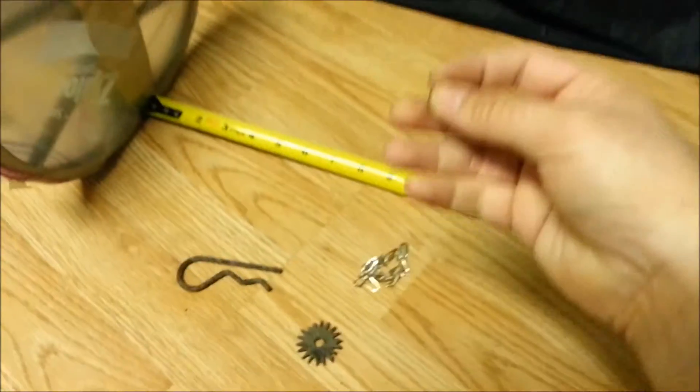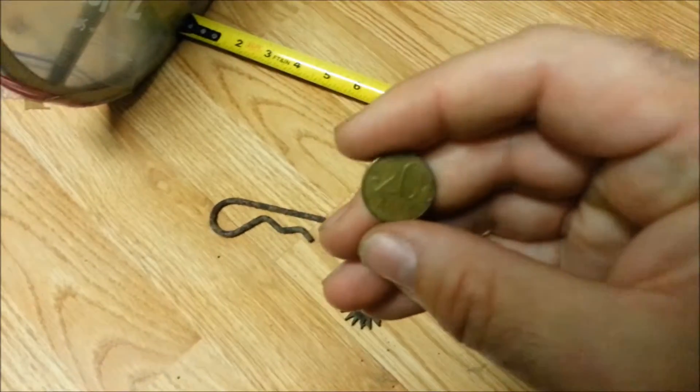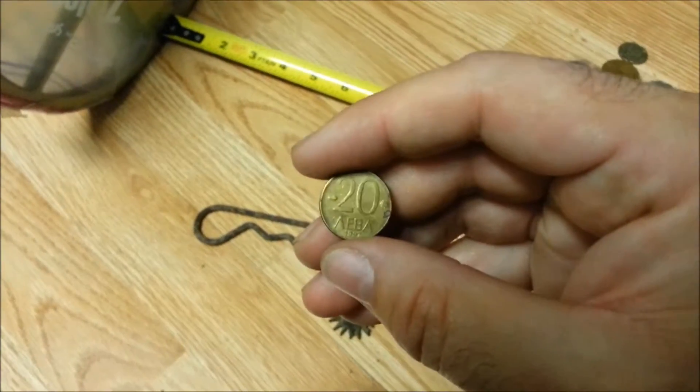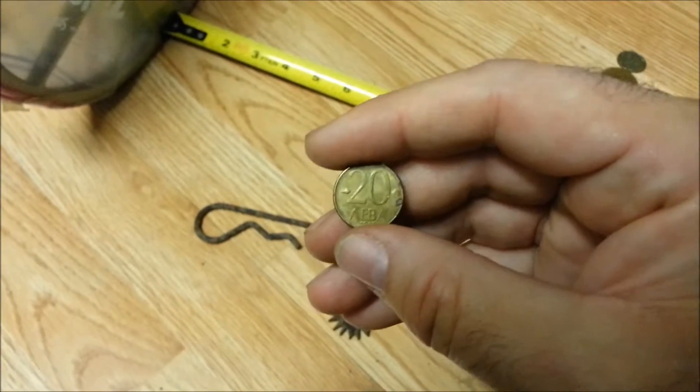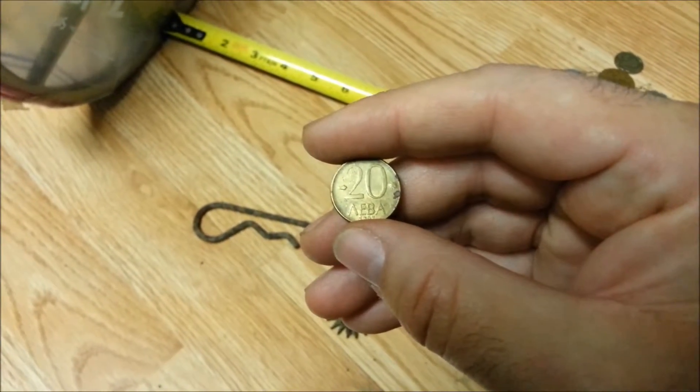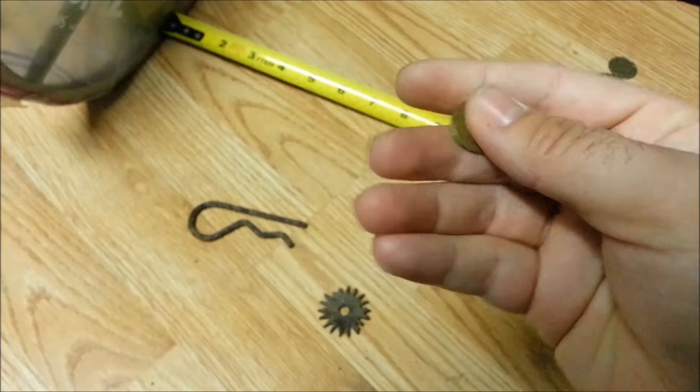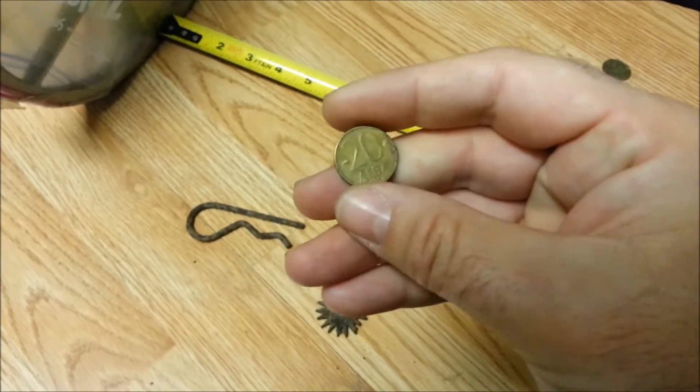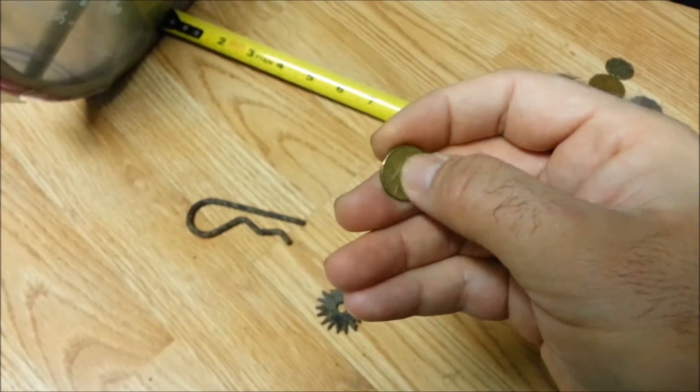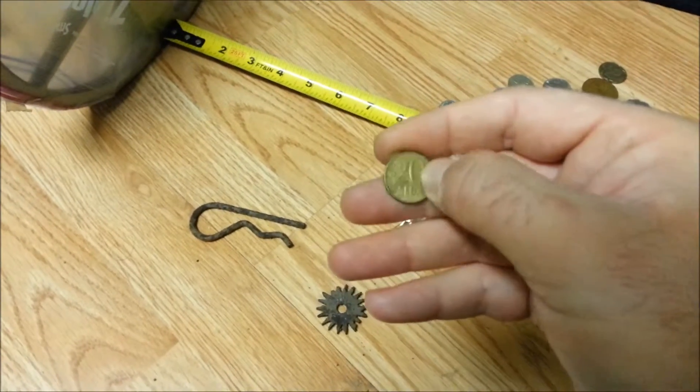Now this coin is smaller than 10 cents. This is Bulgarian tool. It's old, it said 20 leva, but it's actually... yeah, it's old. They don't use it anymore. So it's equal to 2, I think.